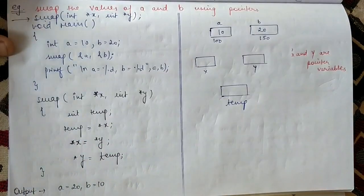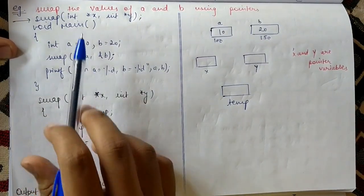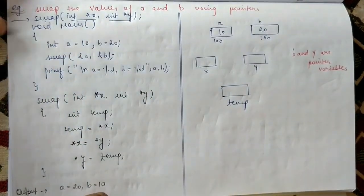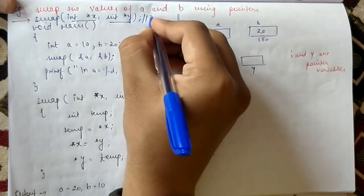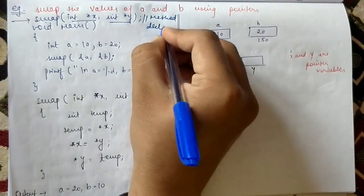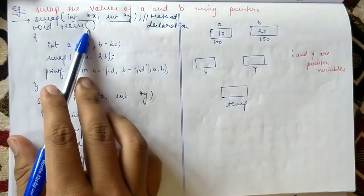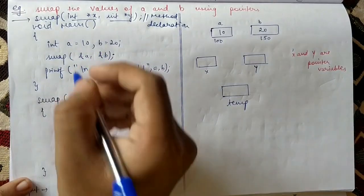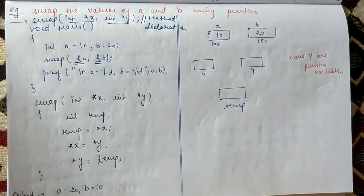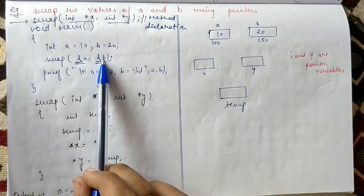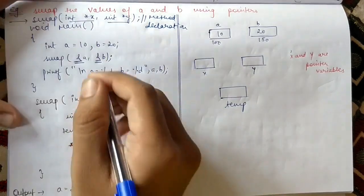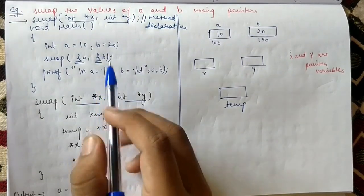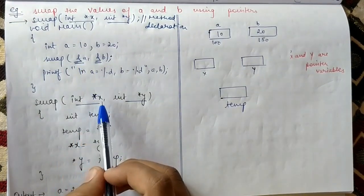Now let's see how this works. We define our swap method to take two integer pointer arguments. In the main method, we declare int a equal to 10 and b equal to 20, and we send the addresses using the ampersand sign — the address-of operator. The addresses of a and b are sent to the swap function and received by pointers x and y respectively, because we are sending addresses.